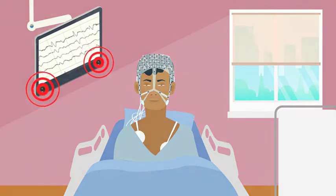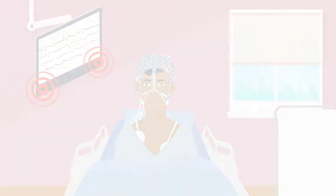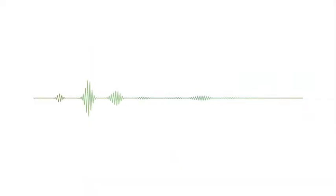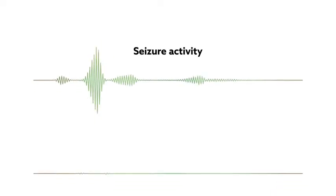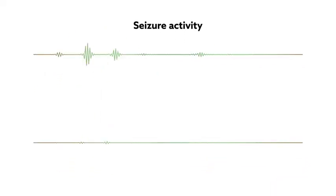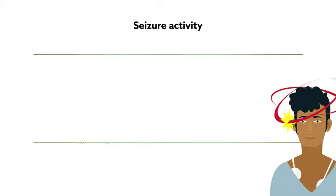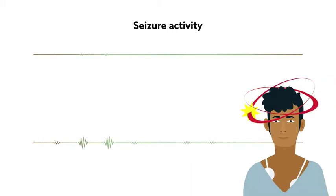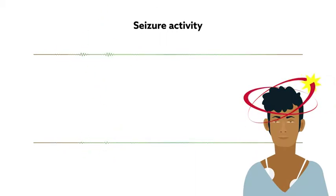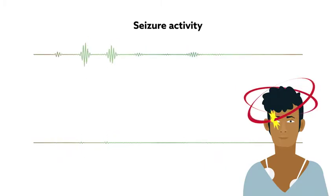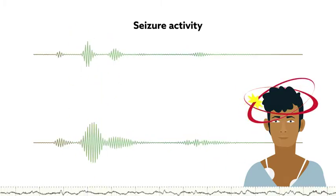The need for the technique arises from the fact that not all seizures generate the rhythmic muscle contractions known as convulsions. Non-convulsive or silent seizures may only alter a patient's mental state, causing confusion or loss of consciousness. This makes it difficult for emergency room providers to tell what's going on.